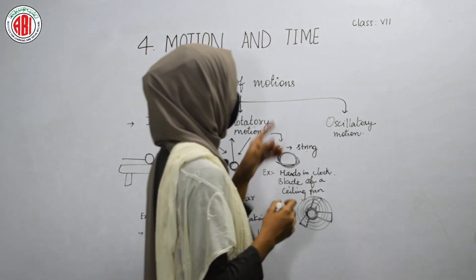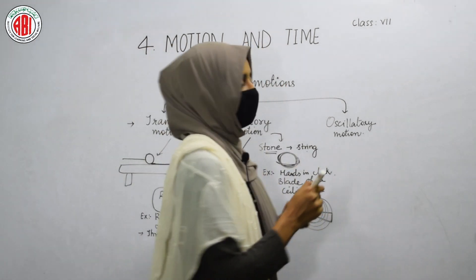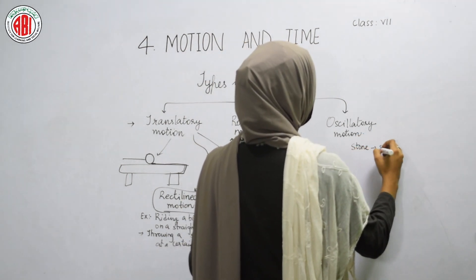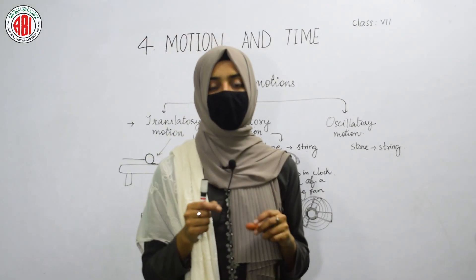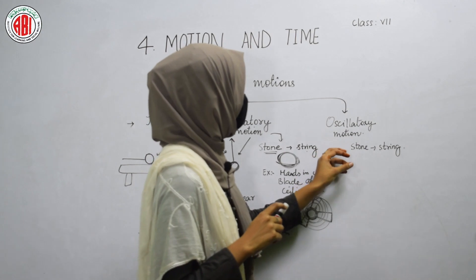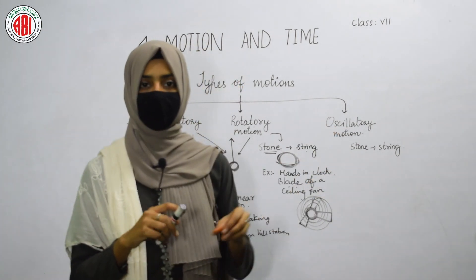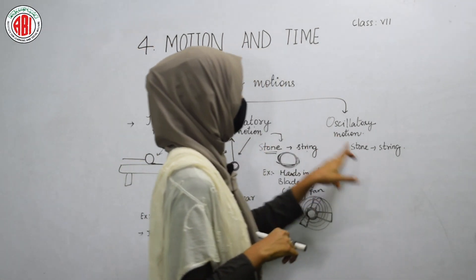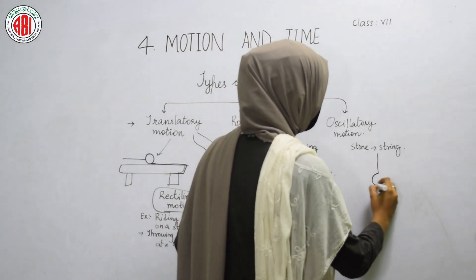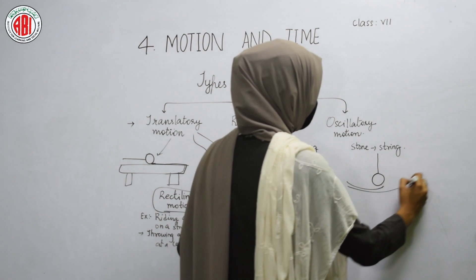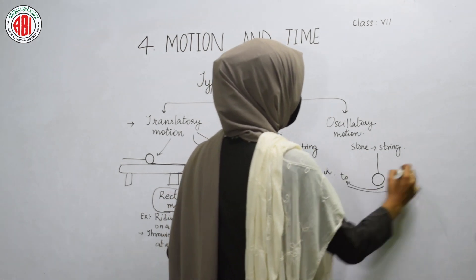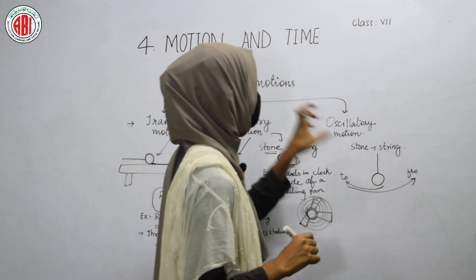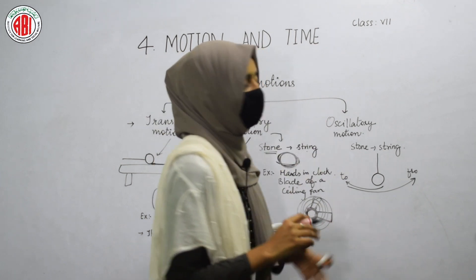Let us move to the next type of motion, that is oscillatory motion. To understand this, take a stone and tie it with a string. Hold one end of the string and pull the stone slowly to one side. Then observe the motion of the stone — it will move in one direction, then back in the other direction. This to-and-fro motion of the stone is called oscillatory motion.